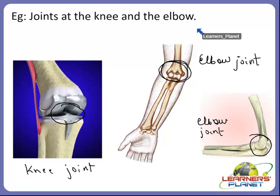In your daily activities, you can try to imagine which type of joint you are using while drinking, while dancing, while gliding, while walking and rolling, or while playing. This will give you a clearer picture about where each joint is present and what type of joint is used where.